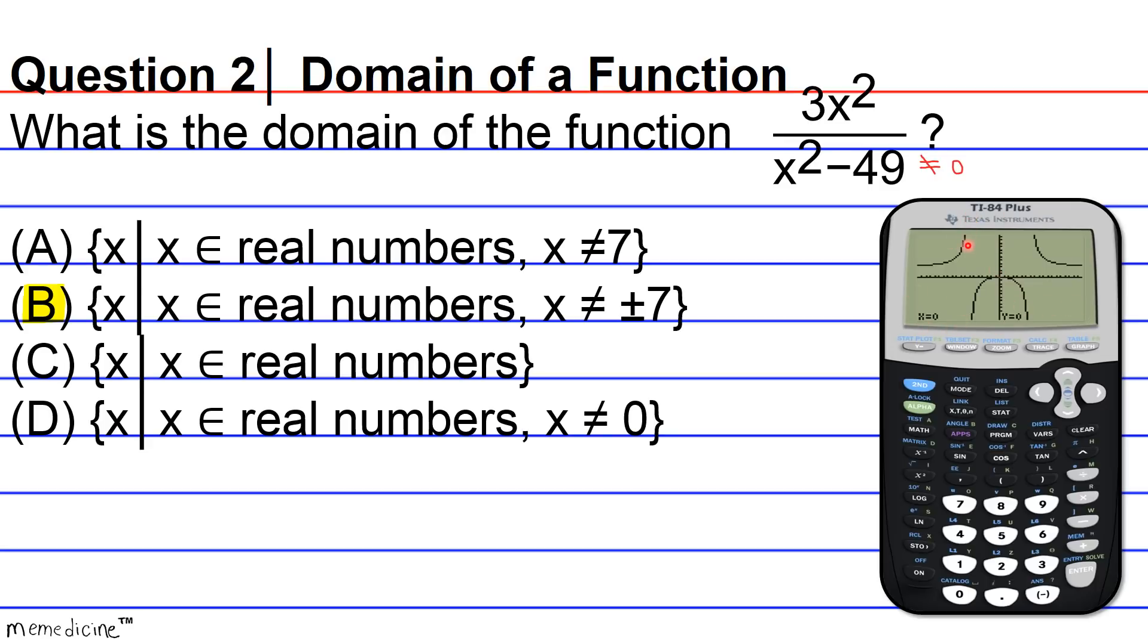And you can see that where x is equivalent to approximately 7, negative 7, and 7, there's a vertical asymptote, meaning the function is empty there or it's undefined, okay? All right, so thanks for tuning in. Good luck studying.